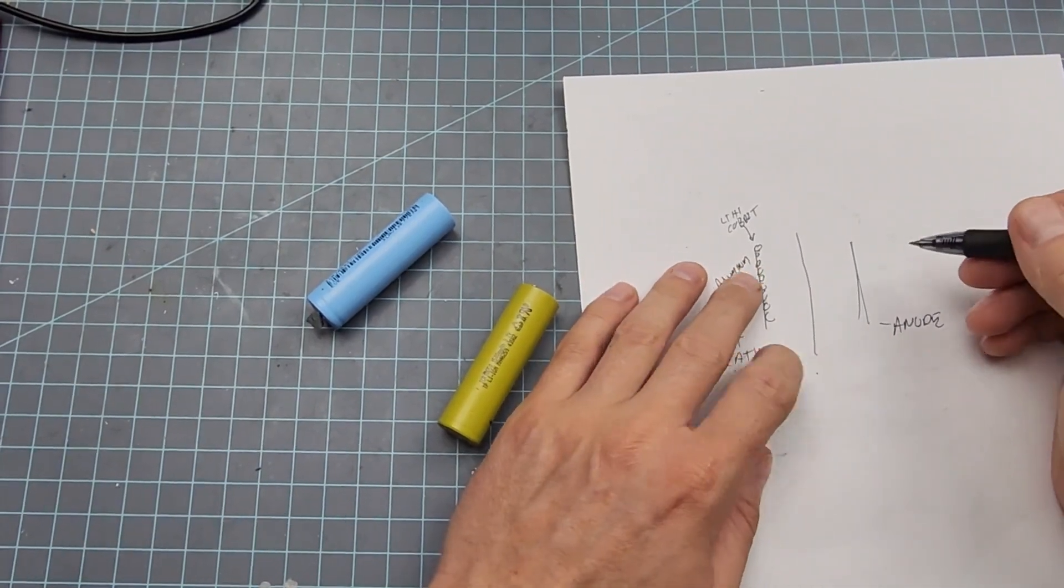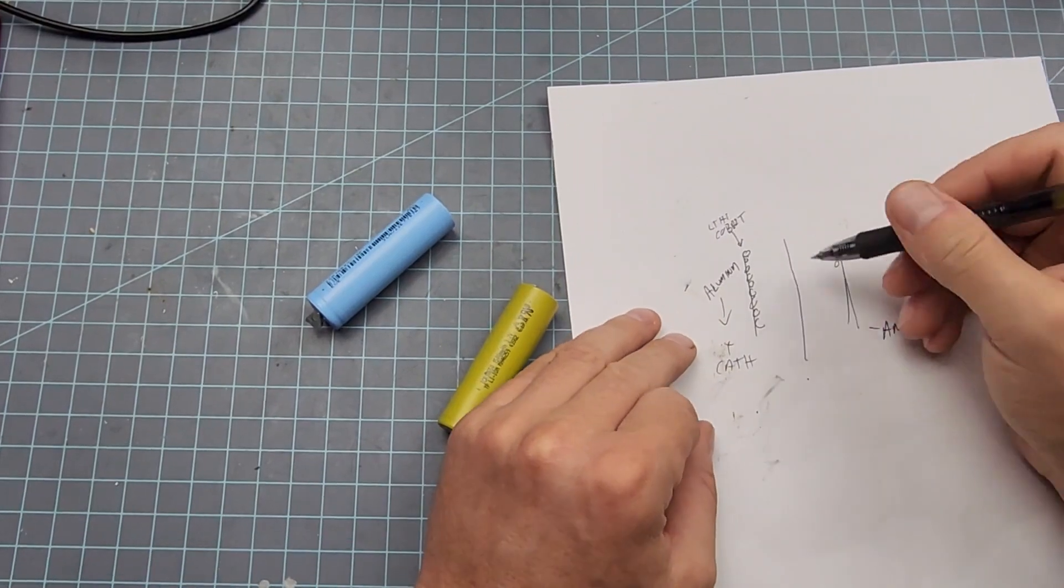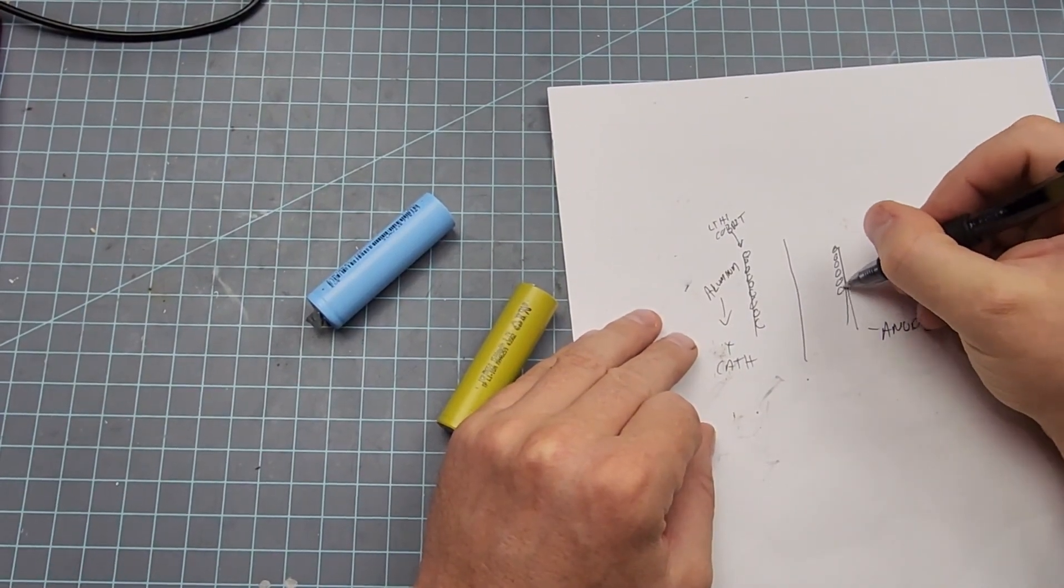The anode is copper. It's the exact same - a copper sheet that's going to be coated with graphite.